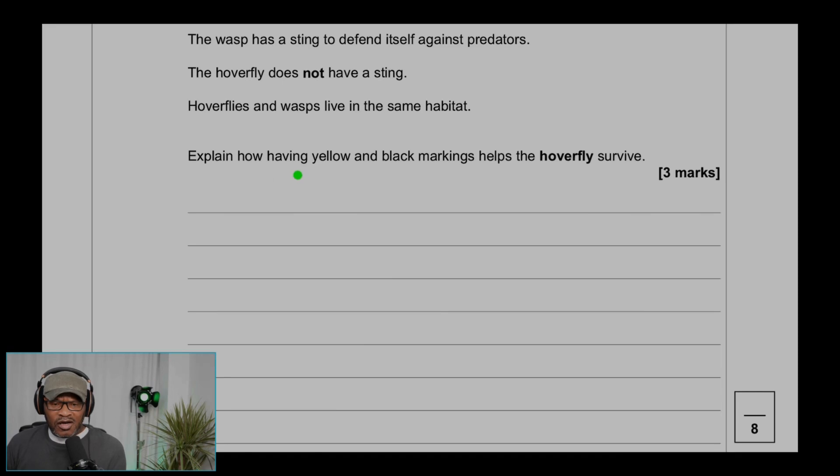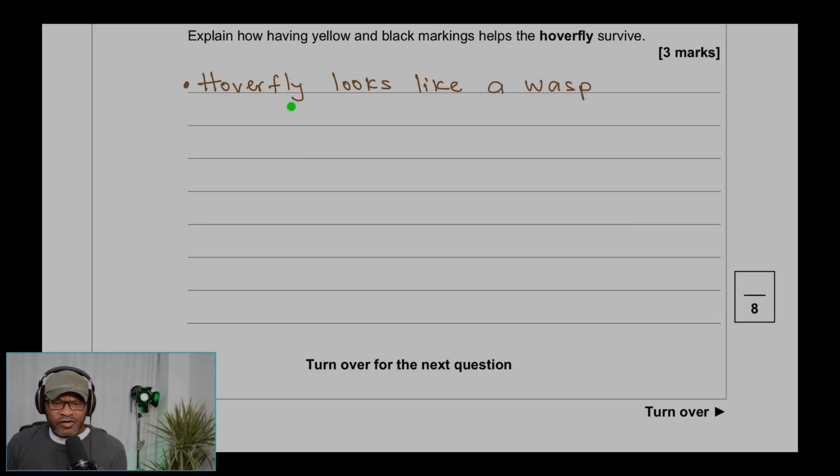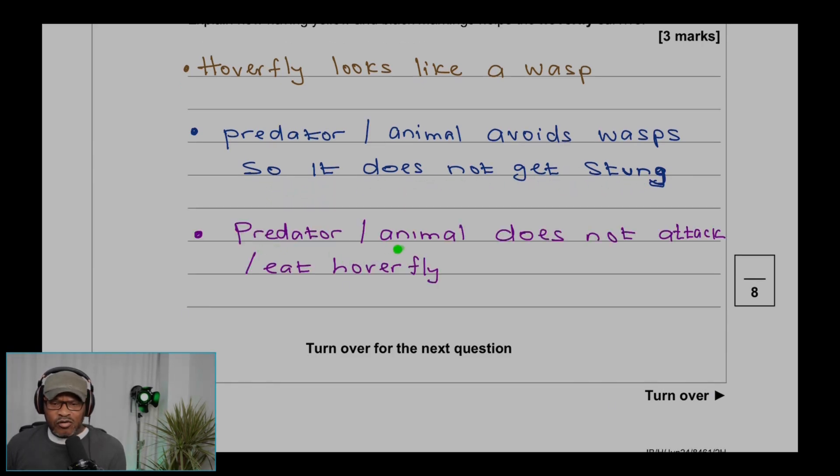The hoverfly looks like a wasp. Predator or animal avoids wasps so it does not get stung. Predator or animal does not attack or eat hoverfly.